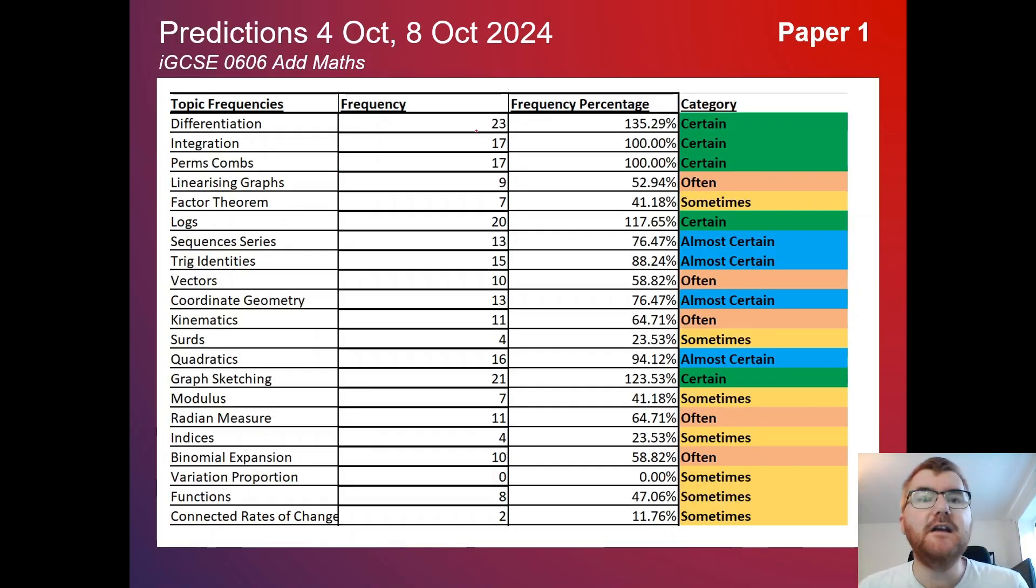Of course all those topic frequencies are there for you. You can see exactly what's appeared. Notice factor theorem at 41%. Even though that's strictly speaking true, it can creep into other topics as well. We haven't talked about sequence and series now at 76% and coordinate geometry. So you do need to have a good basis in those particular topics as well.